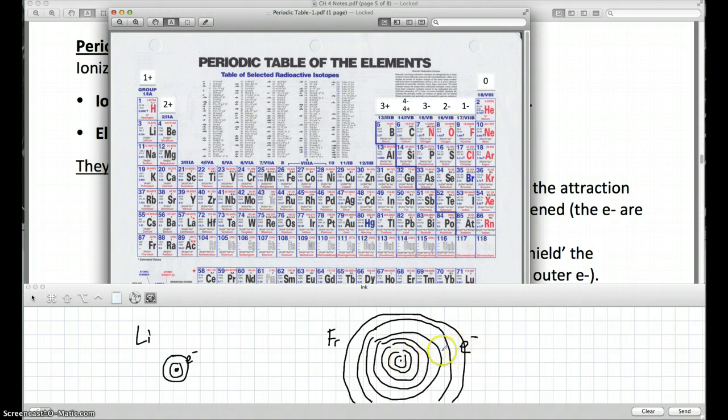So that's something we call electron shielding. The positive in the center, in the nucleus, is getting shielded by all these other electrons in between the outer electron and the nucleus.